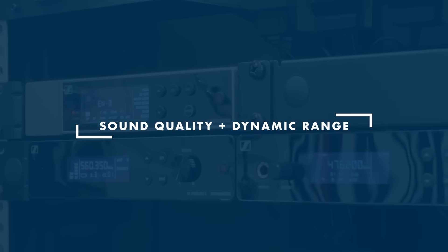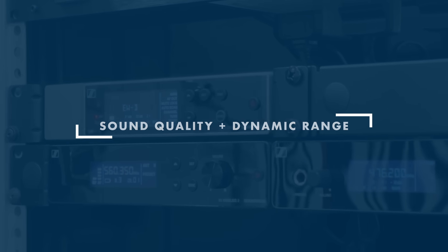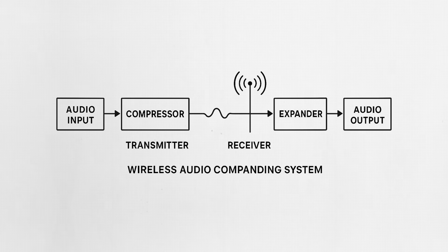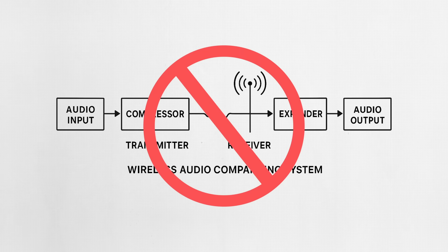Now that we understand the basic principles behind wireless audio, let's explore the key differences between analog and digital wireless. The bandwidth available impacts the dynamic range of the audio signal being transmitted. In analog wireless transmission, this requires the use of a compander that compresses the dynamic range of the audio going into the system and expands the dynamic range on the other end. Digital wireless systems do not require a compander, and one of the biggest implications is that you'll have a much more natural and accurate reproduction of the original audio signal with a digital wireless system.